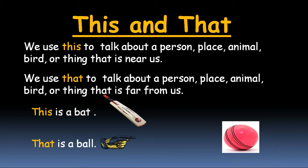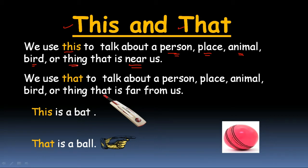'This' और 'That' का कंसेप्ट — हम 'this' कब यूज करते हैं? We use 'this' जब हम किसी भी noun को बताते हैं जो की हमारे पास है — any person, any place, any animal, any bird, any thing जो हमारे पास है, that is near us, उनको बताने के लिए हम use करेंगे 'this'।